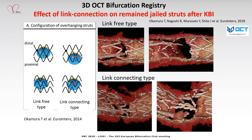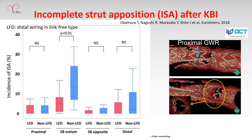These are the representative cases. A link-free type distal wiring can achieve wide opening. However, in a link-connecting type, even after distal wiring, link connection still remains at the side branch OCT. We defined distal wiring in link-free type as LFD type. We compared LFD and non-LFD type in terms of incomplete stent apposition. Here you can see in the side branch OCT, LFD type has lower incidence of incomplete stent apposition compared to the non-LFD type.